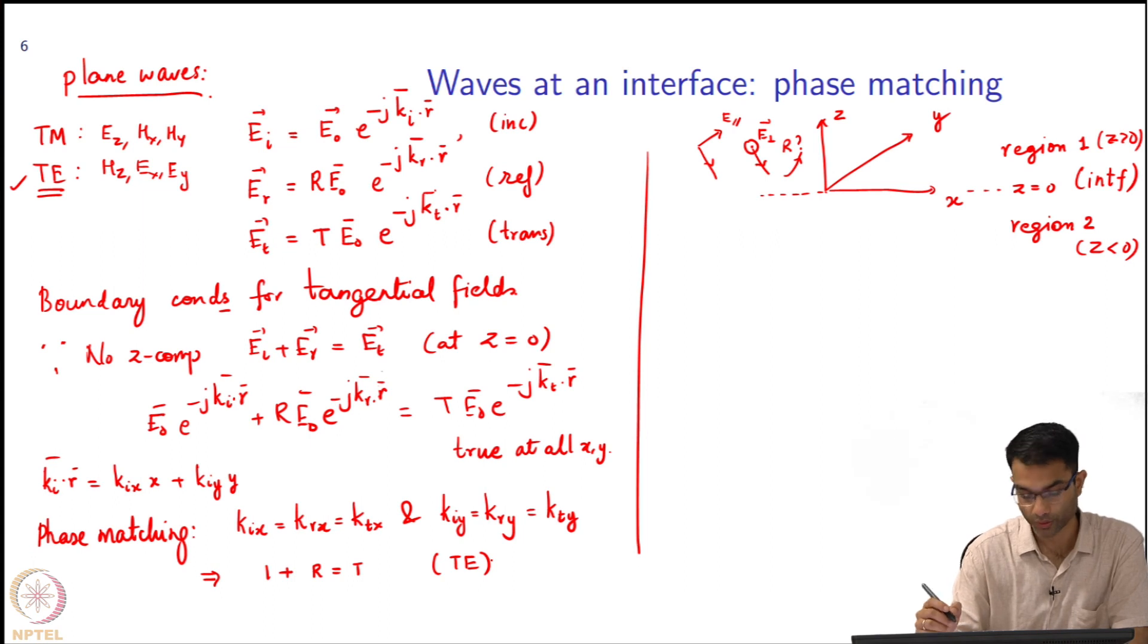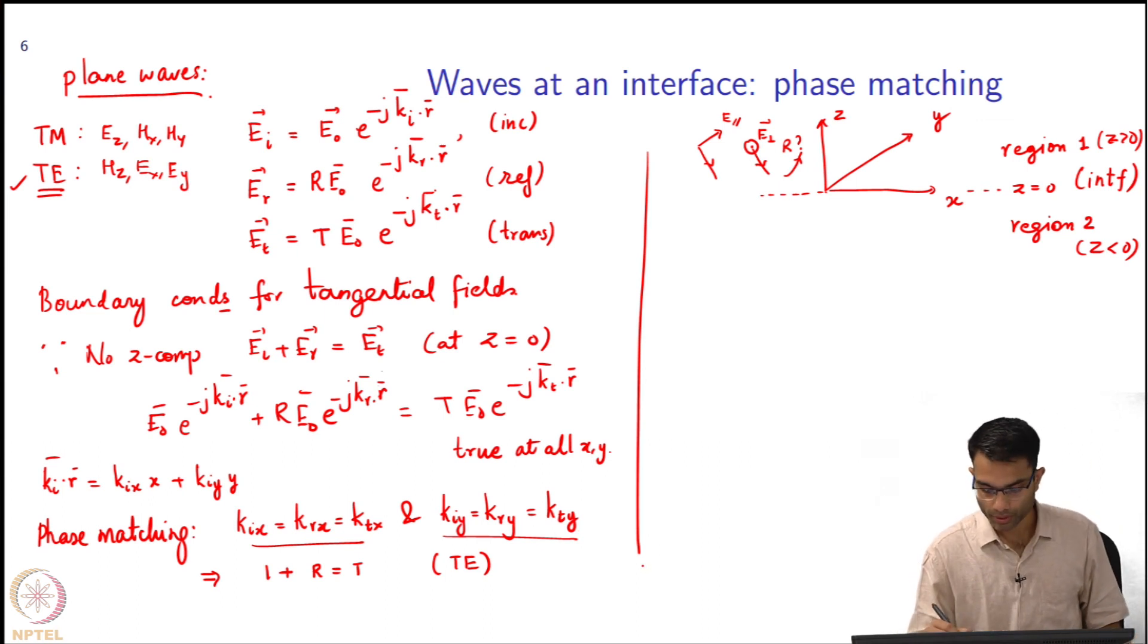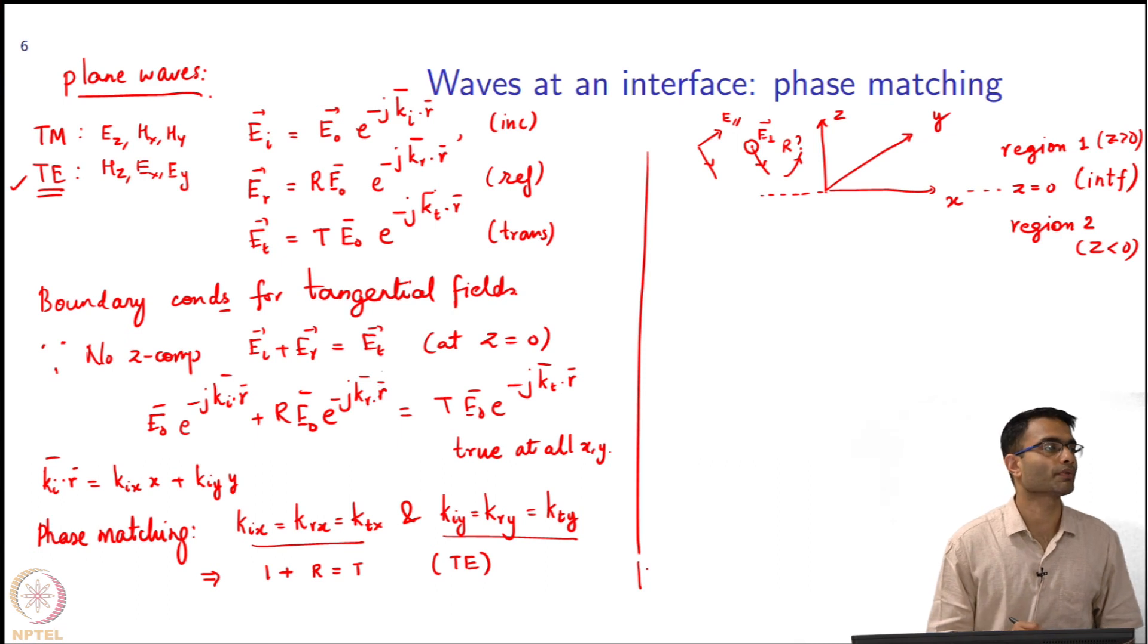I have got one equation in two variables r and t. But wait - you notice that these relations taken together basically give you Snell's law. Once you write these k vectors in terms of angles, you will get n1 sin theta equals n2 sin theta. All of that comes from here, but we are not going that route. Next, what do we need to do?